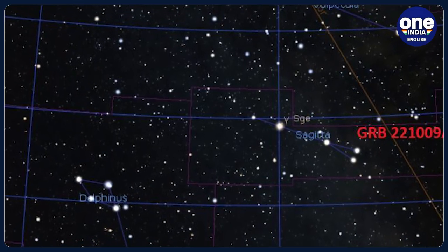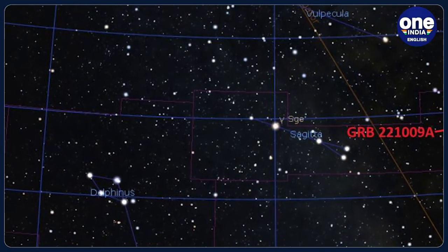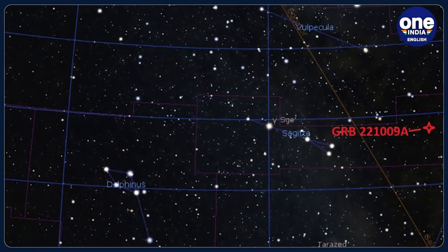This disturbance is comparable to the effects of a major solar flare, affecting the ionosphere's lowest layers.